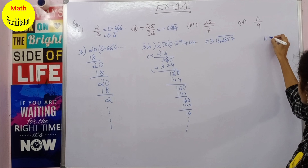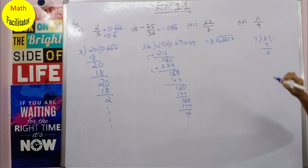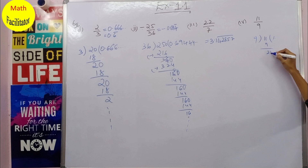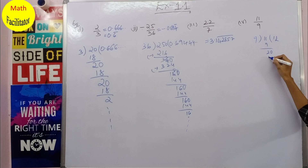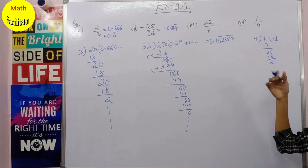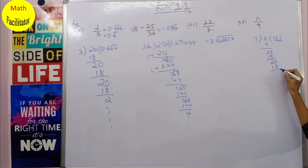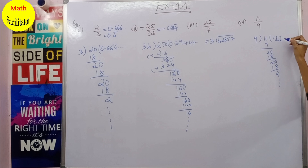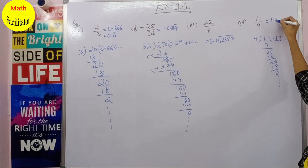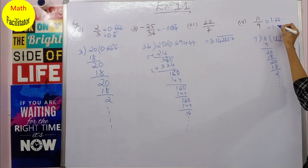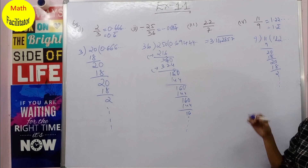Next is 11 divided by 9. 9 × 1 = 9, remainder 2. Take a decimal point: 9 × 2 = 18, remainder 2. This remainder 2 keeps repeating and the quotient digit 2 keeps repeating. So 11/9 = 1.222… = 1.2̄.